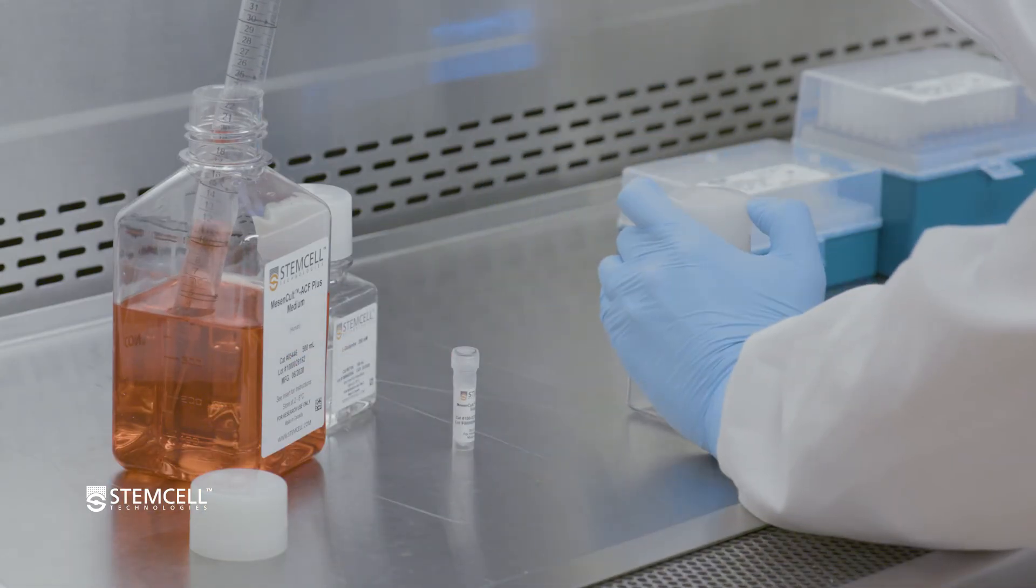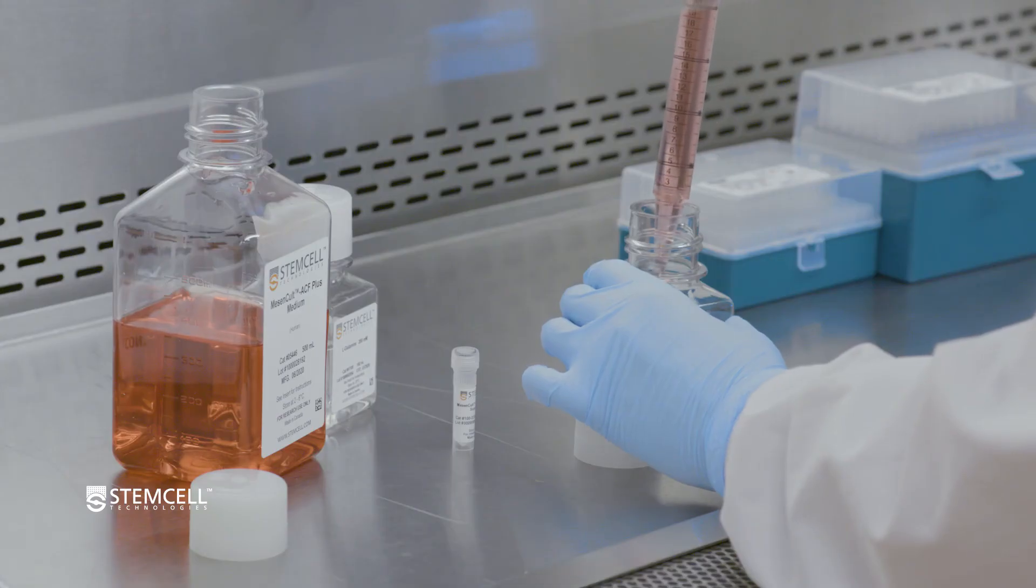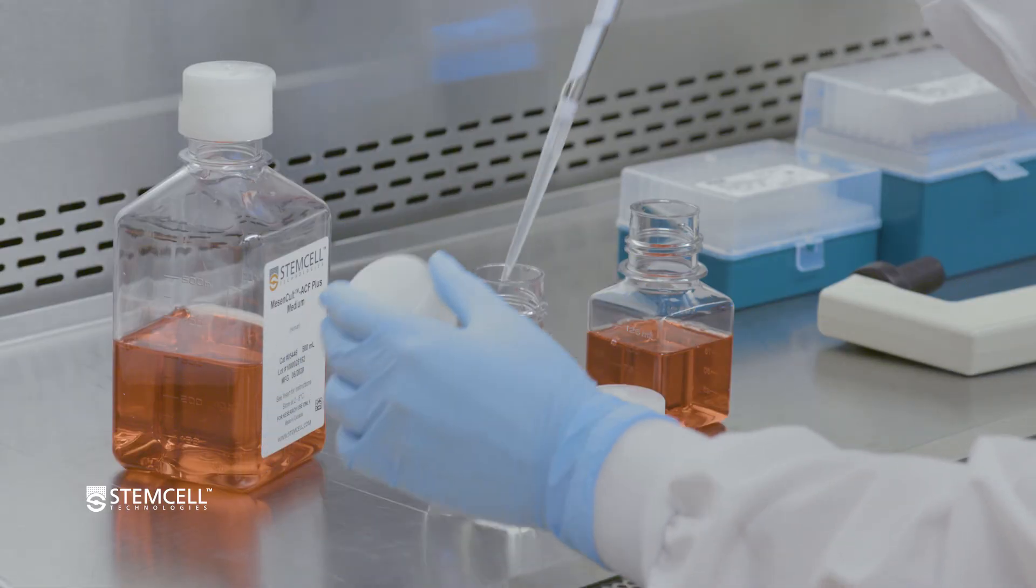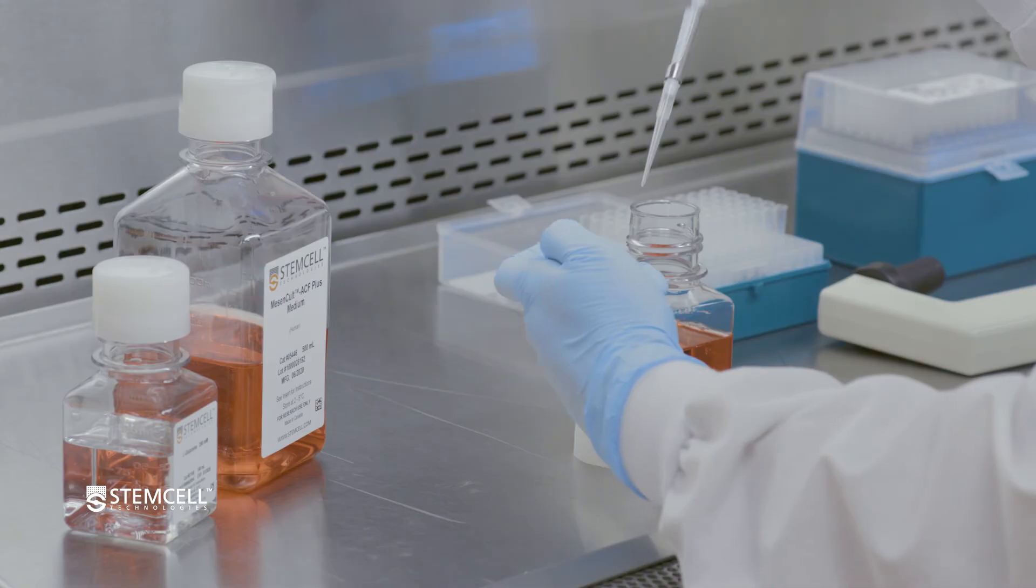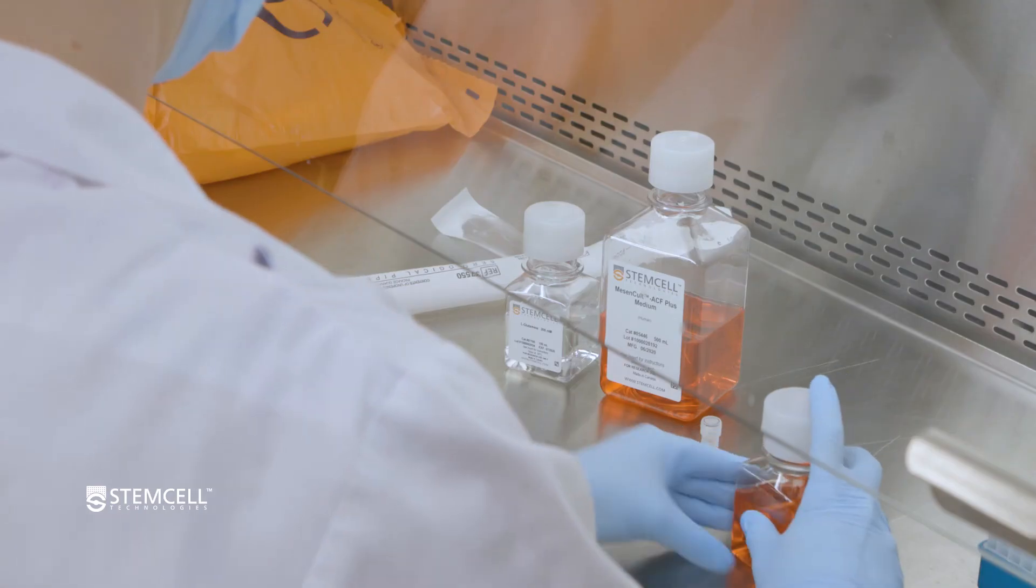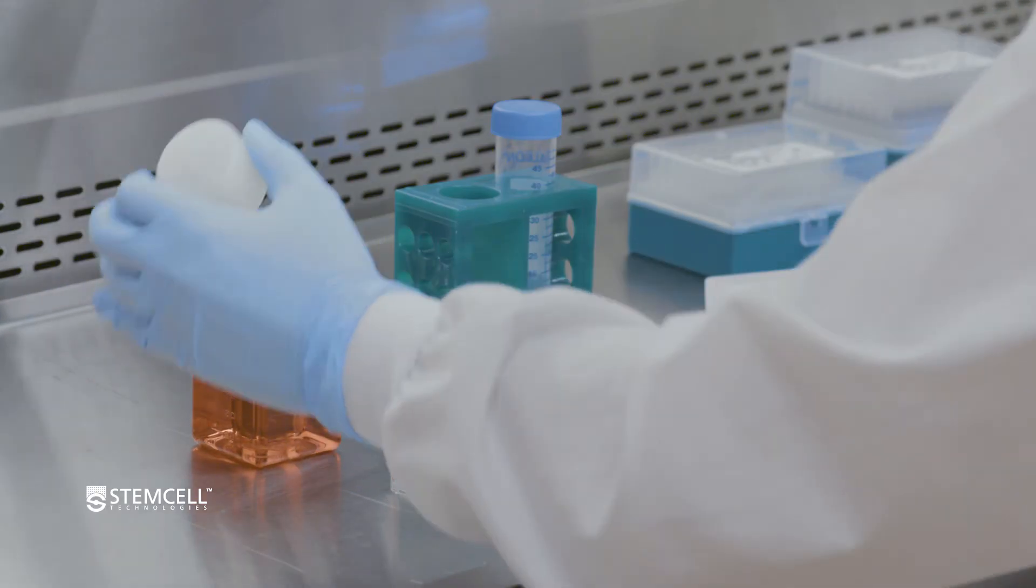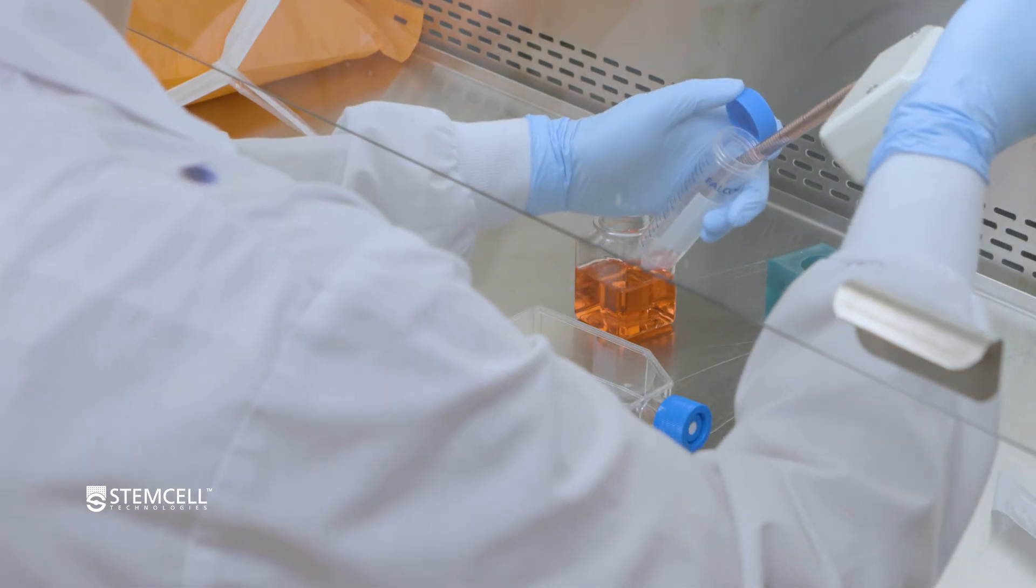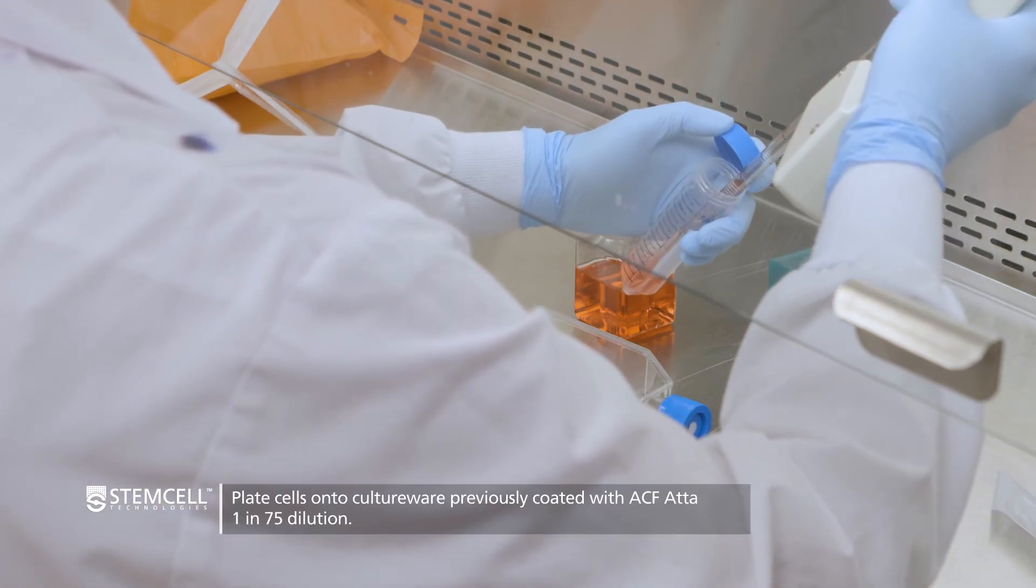Umbilical cord MSCs should be expanded in MesenCult ACF Plus medium. Prepare the required amount of complete medium by adding MesenCult ACF Plus 500X supplement and L-glutamine to MesenCult ACF Plus medium. Re-suspend the cells in complete MesenCult ACF Plus medium at the appropriate concentration to maintain 1,500 to 3,000 cells per cm2 surface area. Plate cells onto coated culture wear.